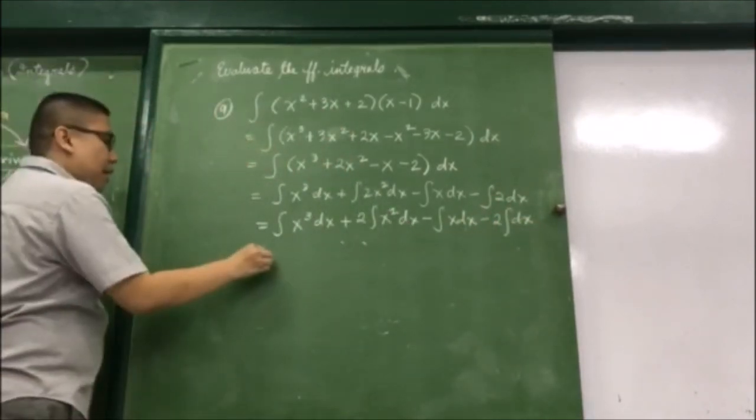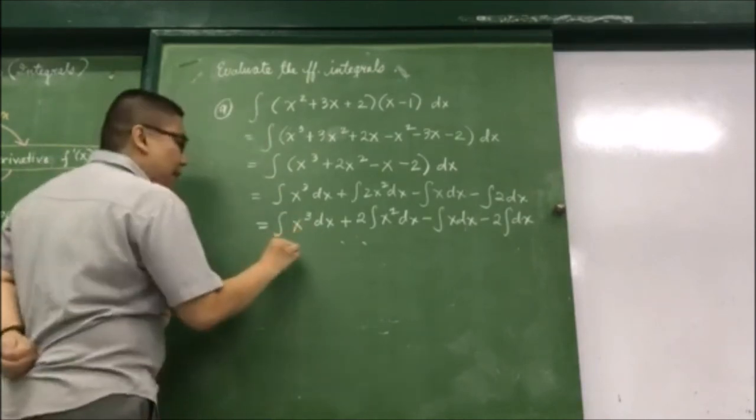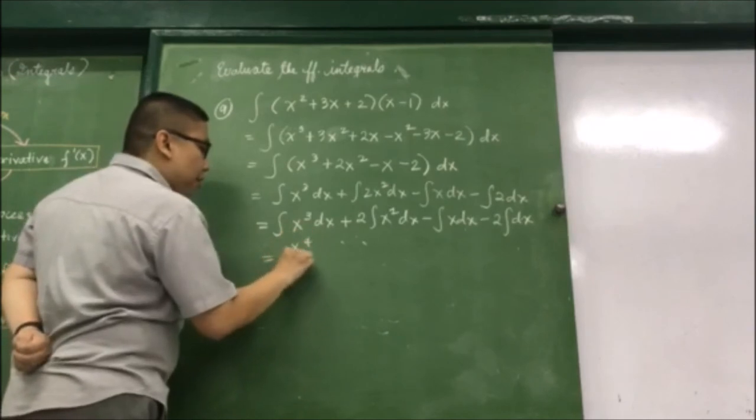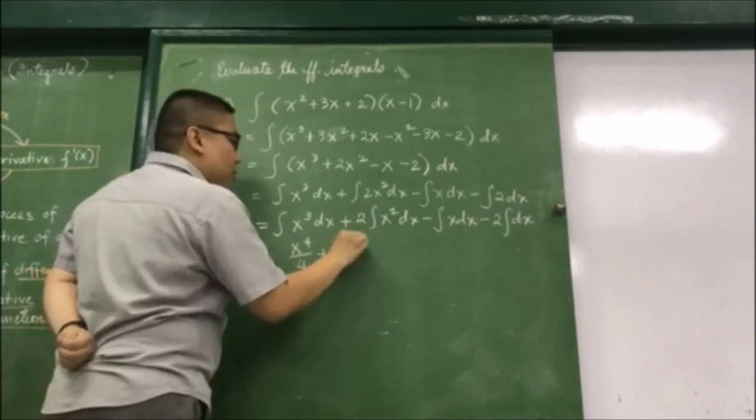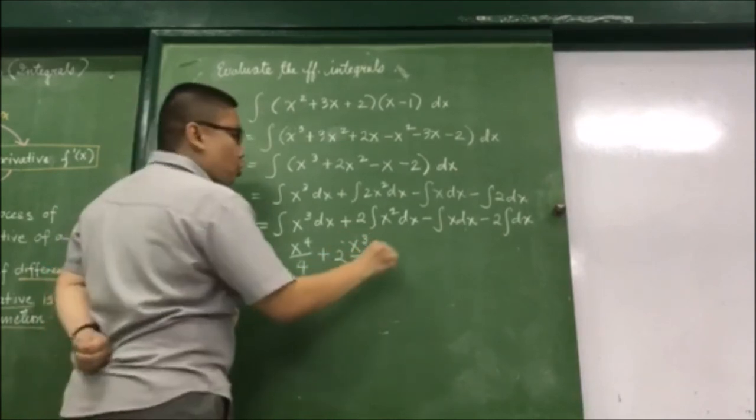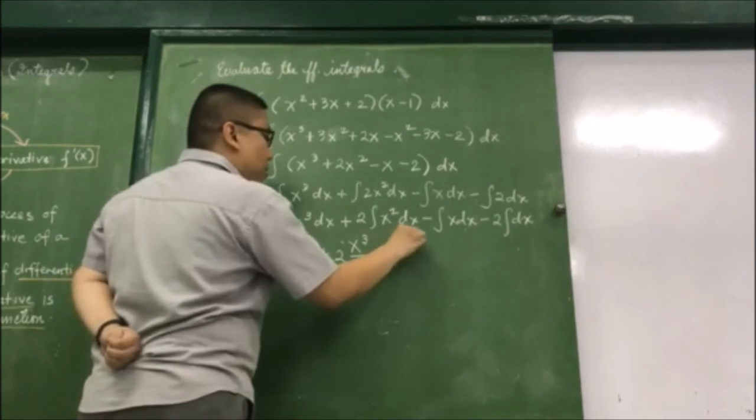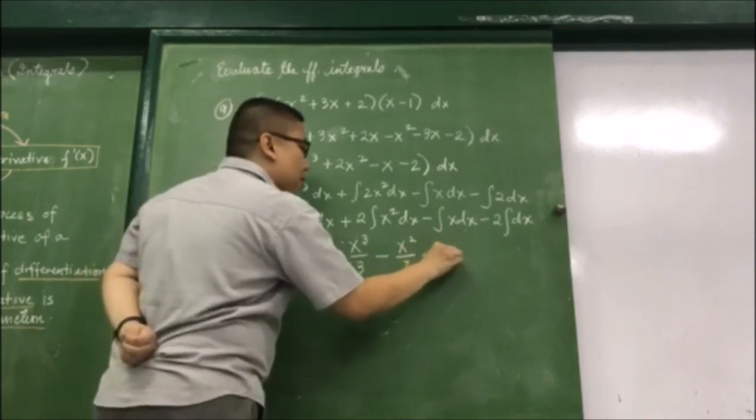Let us now apply the power rule. This becomes x to the 4th over 4, and then plus 2x cubed over 3, and then minus x squared over 2, and then minus 2x plus C.